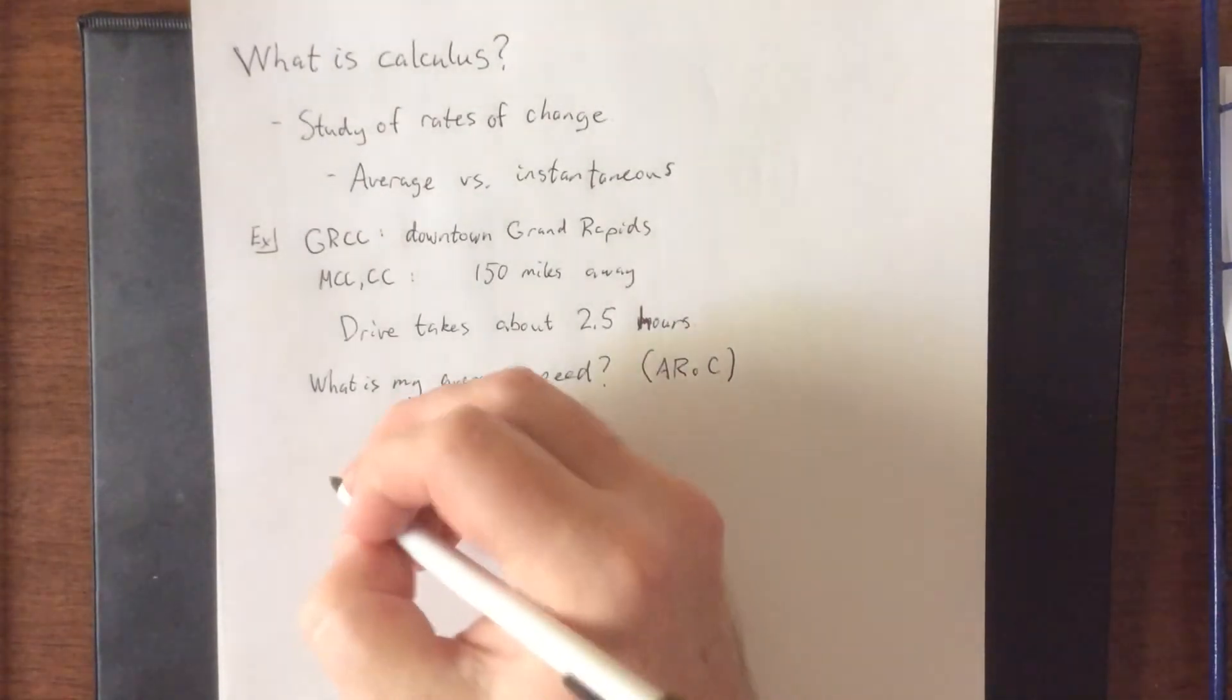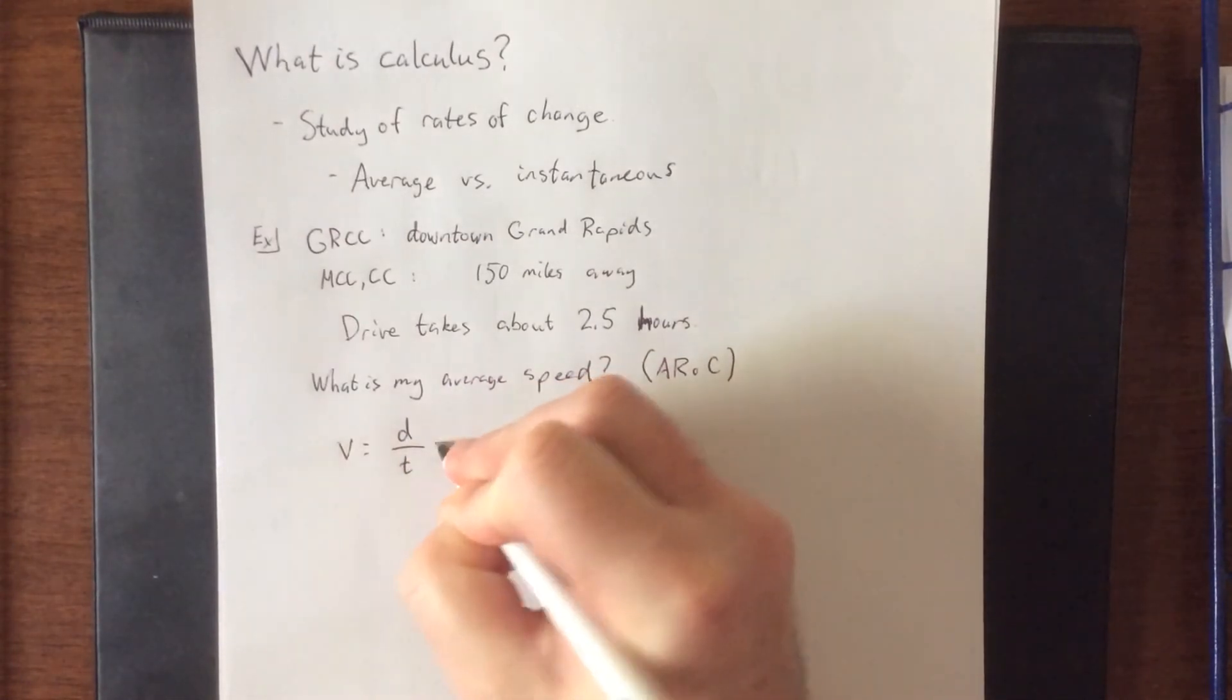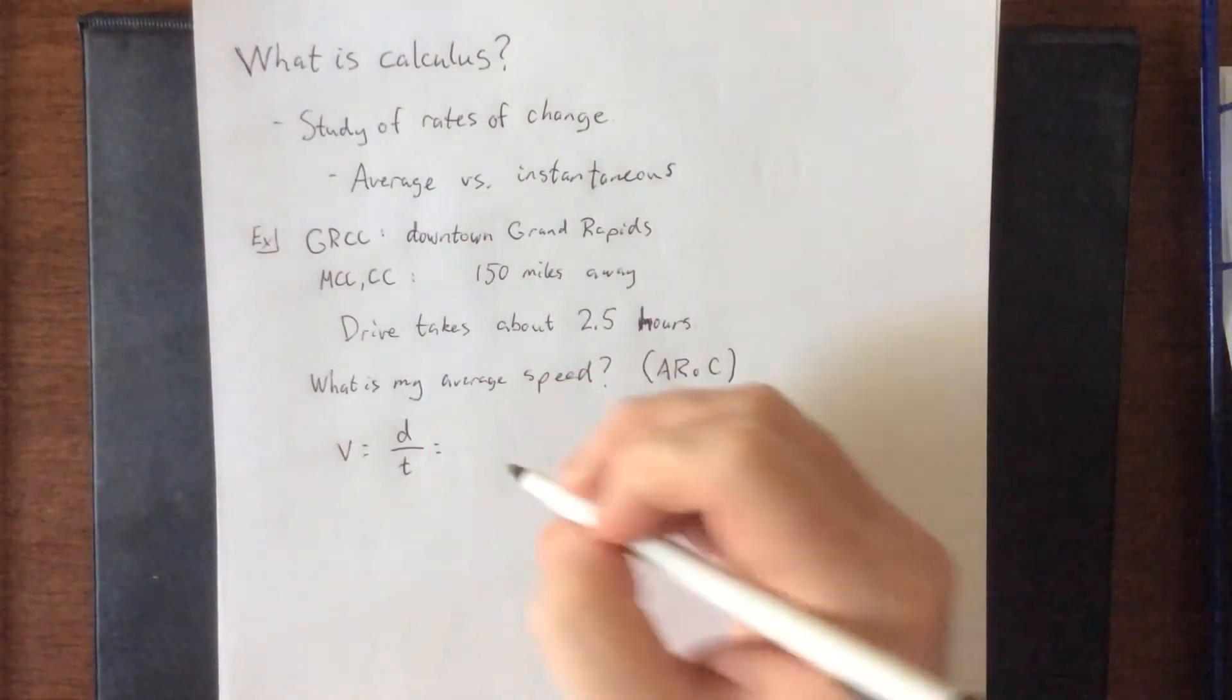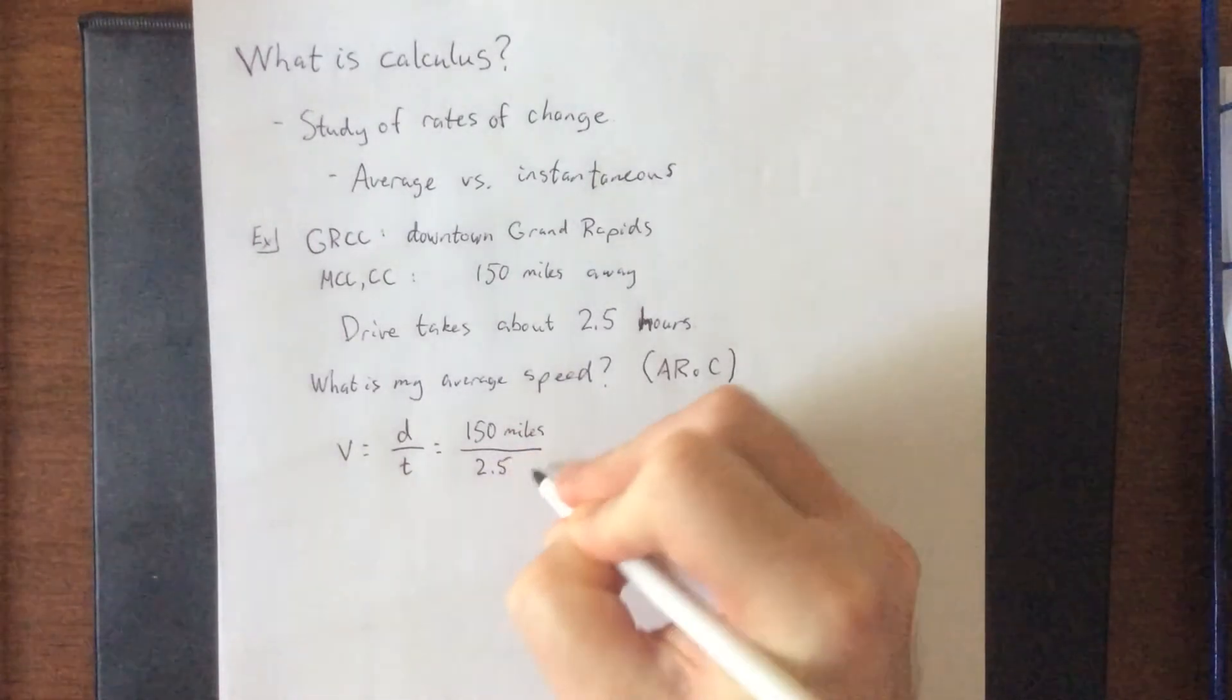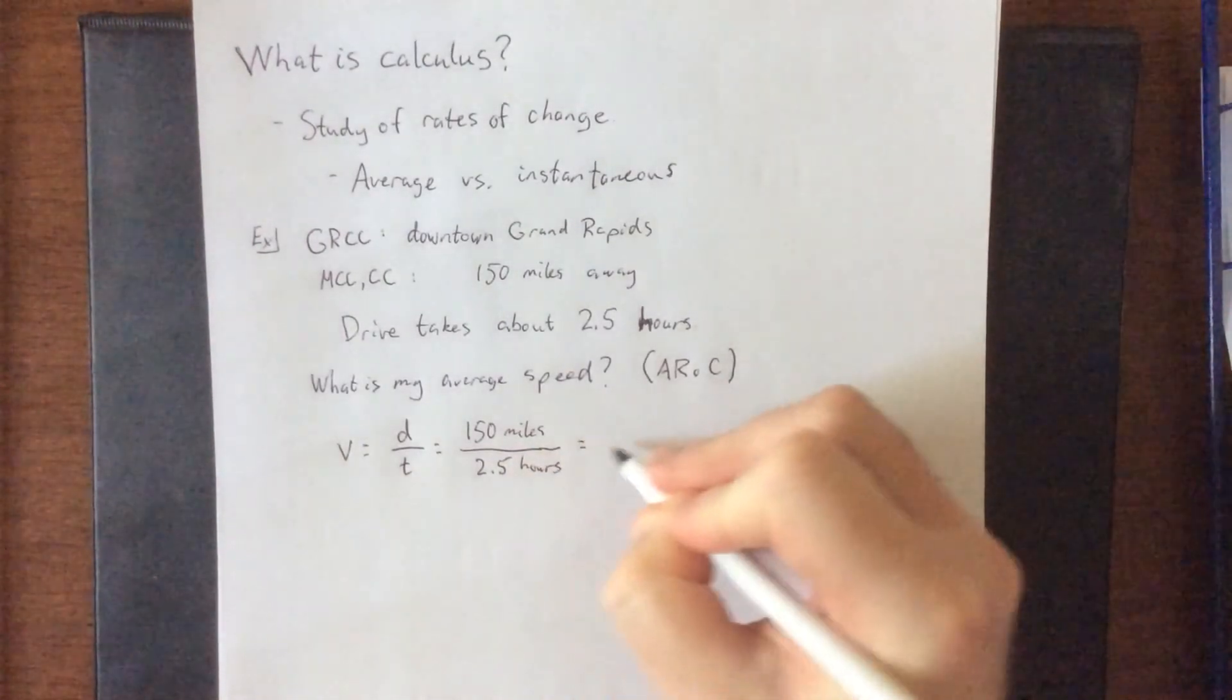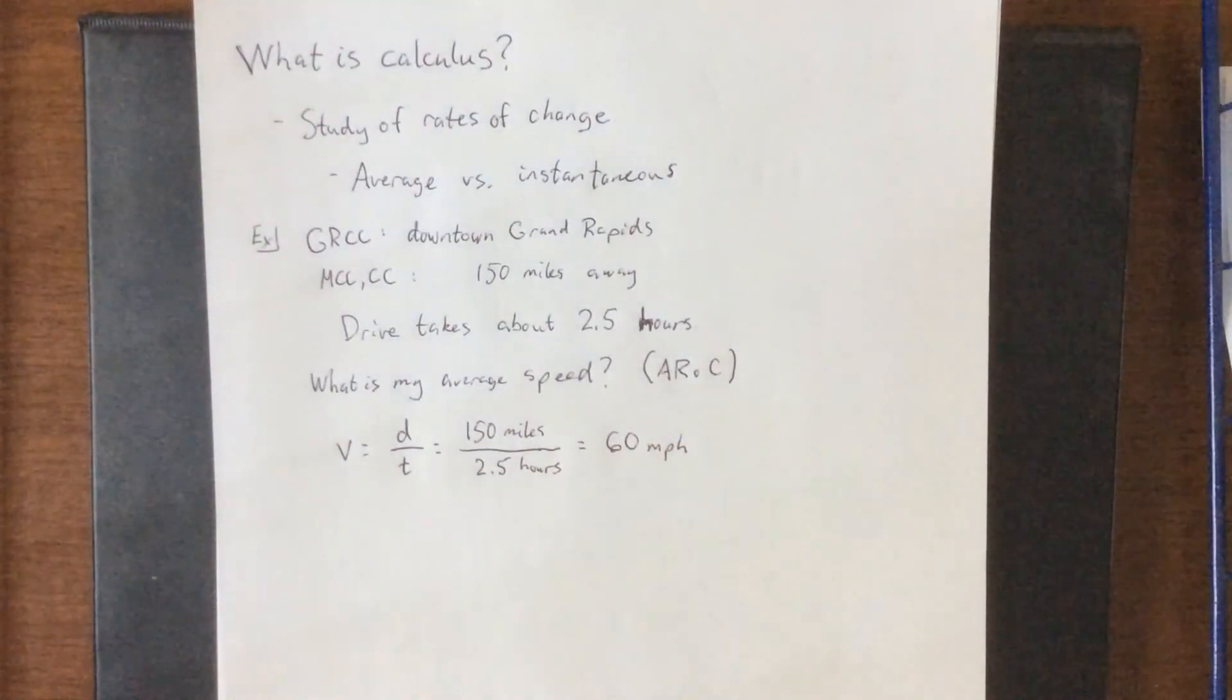Now average rate of speed comes to us from a formula from physics, and it's that your velocity is equal to your distance divided by time. Total distance travel was 150 miles. Total time duration was 2.5 hours. If you're interested in grabbing a calculator for this, that's fine. But I will let you know that that means that my average trip, or my average speed during the trip, was 60 miles per hour.